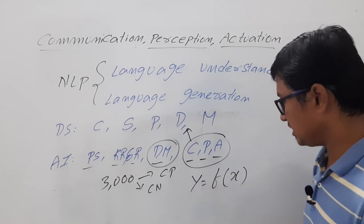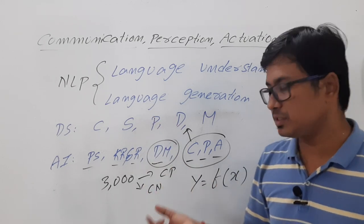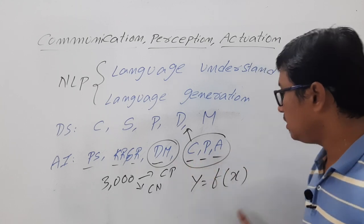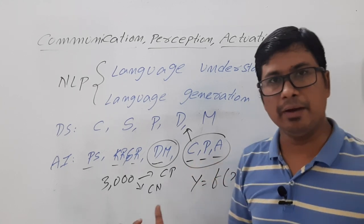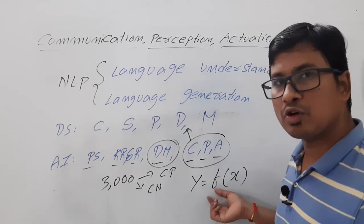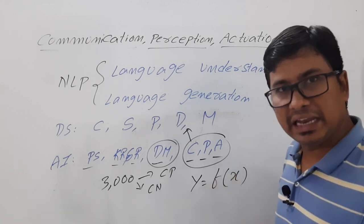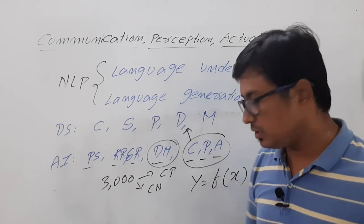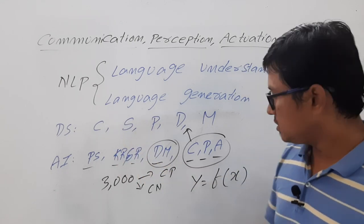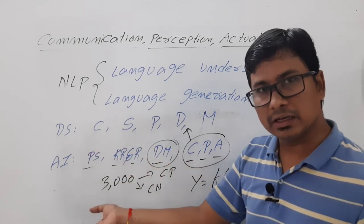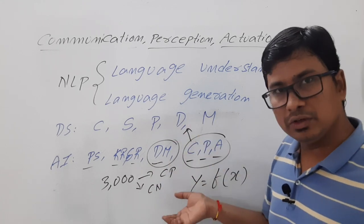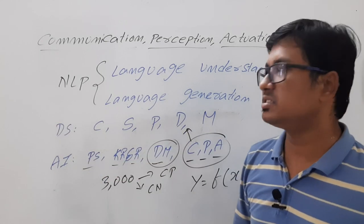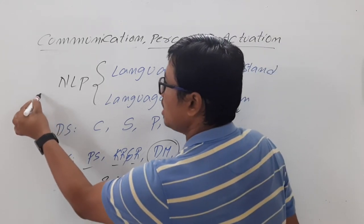You need to estimate a function from the data using learning algorithms. Once the function is estimated, you give a new input and it predicts the result. This is the main task in deep learning or machine learning — estimating a complex function f using given data and learning algorithms, then using it to predict outputs for new inputs. Similarly, for perception problems, we collect, store, process, and describe data, then apply data modeling.